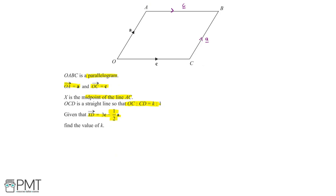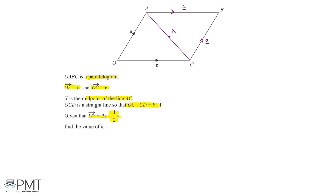We are told that X is the midpoint of the line AC, so if we draw on the line AC, we can label X in the centre of this line. We are also told that OCD is a straight line such that OC to CD is equal to K to 1, so D is somewhere along the straight line OC after it has been extended.